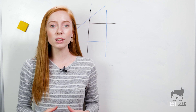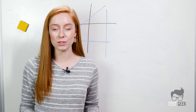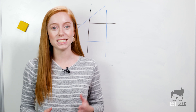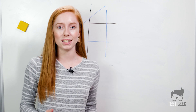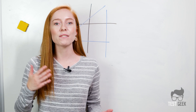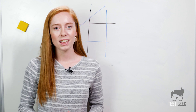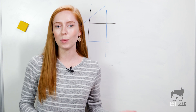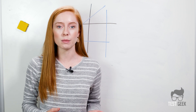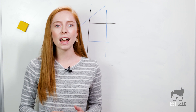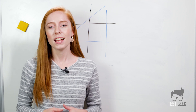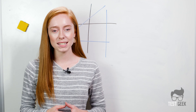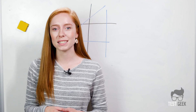A good rule of thumb is when you have multiple variables, you need to have the same number of distinct equations as you have variables you're trying to solve for. So for example, if you have an x and a y — two variables — you need two distinct equations in order to solve for both. Let's look at a few examples.